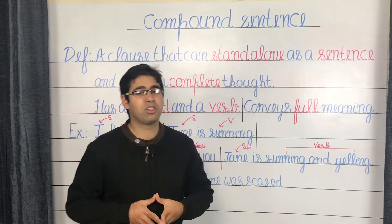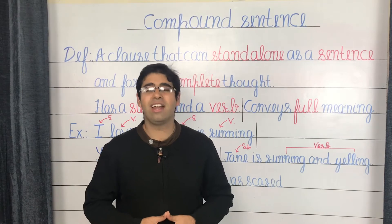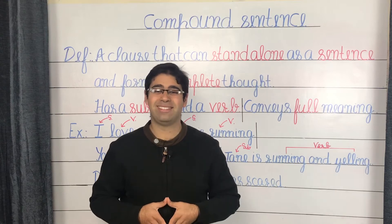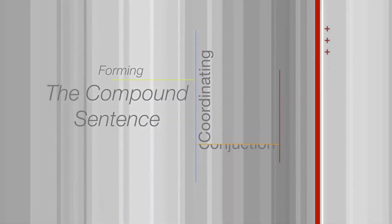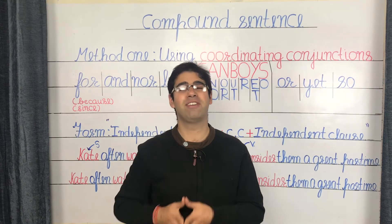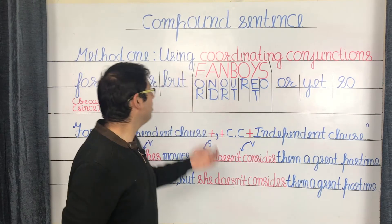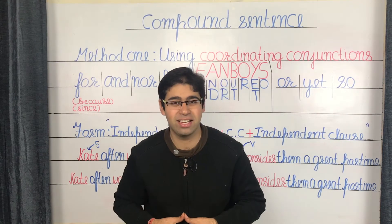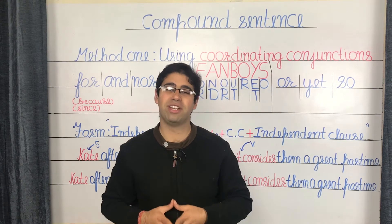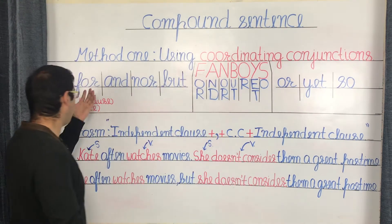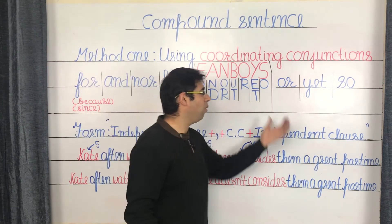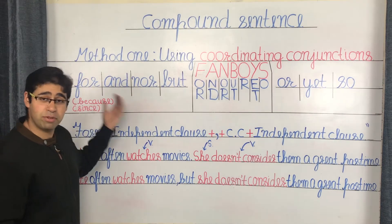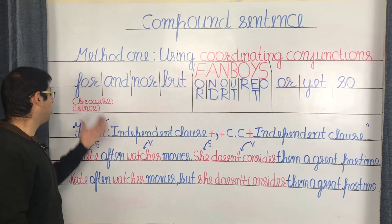Now that we have a firm grip on the concept of the independent clause, we can move ahead to the first method of constructing a compound sentence: using coordinating conjunctions. Coordinating conjunctions are seven basic connectors used to link or join two independent clauses. They are: for, and, nor, but, or, yet, and so. Please bear in mind that 'for' in this case is not the preposition for, but the conjunction that means because or since.